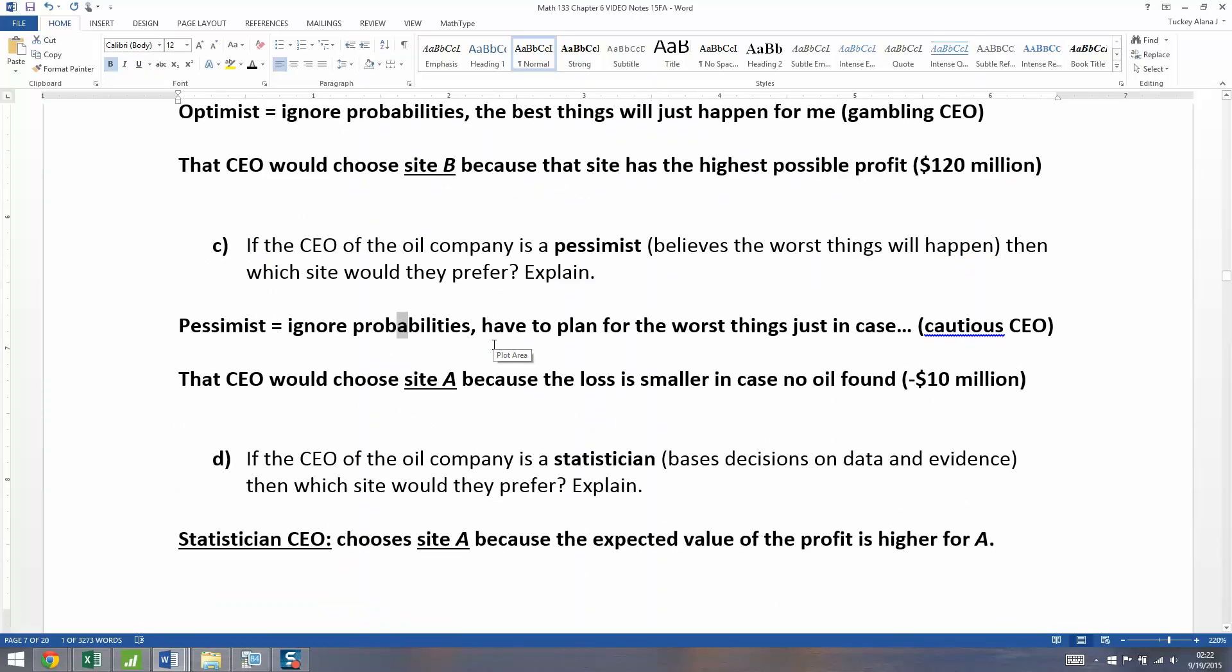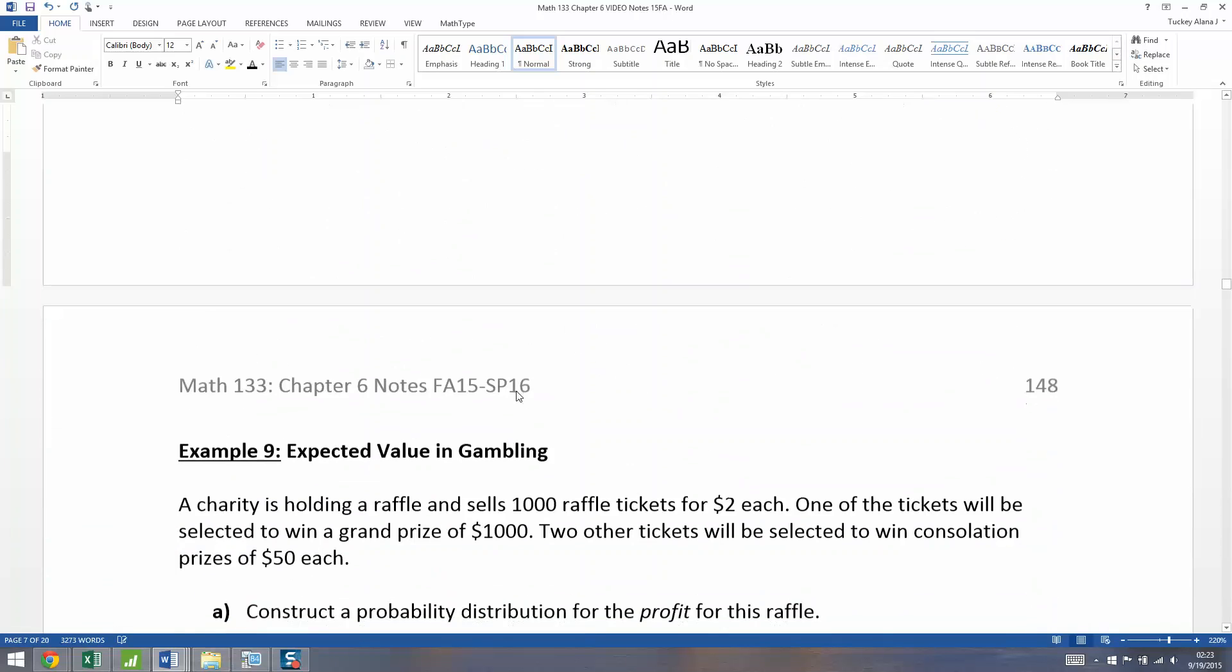And this is truly how decisions do get made at companies. Of course, we're simplifying it quite a bit, but nevertheless, big companies, oil companies for certain, and all the big companies you can think of, Johnson and Johnson, GE, Google, Facebook, Apple, they all employ armies of statisticians to try to figure out what the best decisions are for the company.